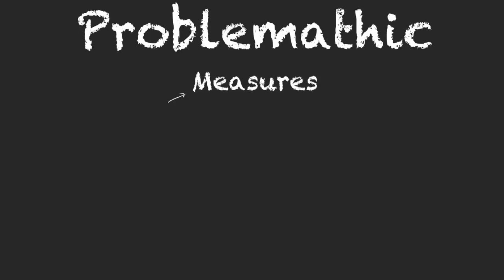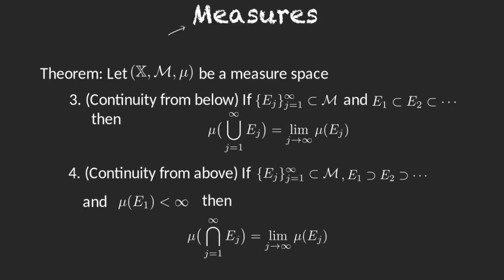In our last video we proved two properties about measures, and in this video we will continue with two more properties that are a bit harder, but are also properties of measures. The theorem starts very similar to our previous one: we have a measure space, so x is a non-empty set, m is a sigma algebra defined over x, and mu is a measure defined in the sigma algebra m. We want to prove properties 3 and 4 — last video we had 1 and 2, so we continue with the numeration.